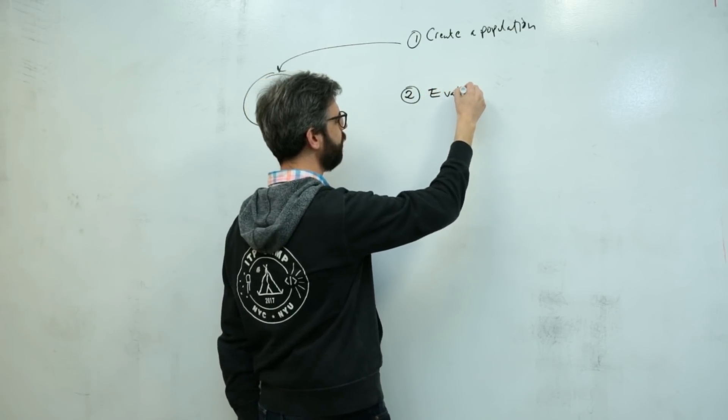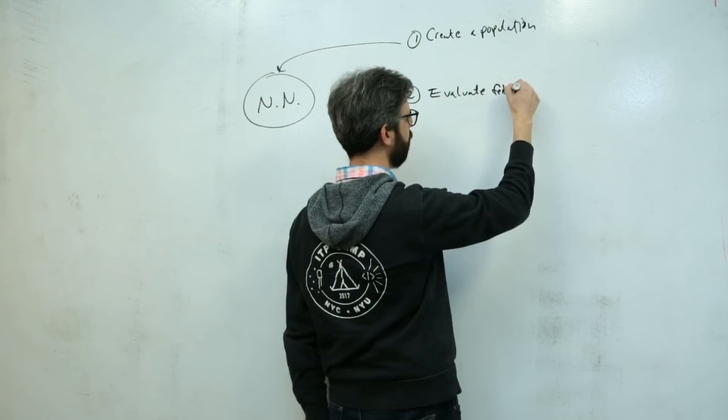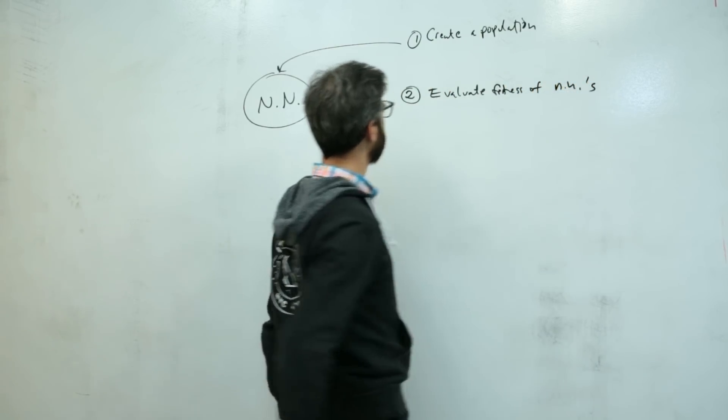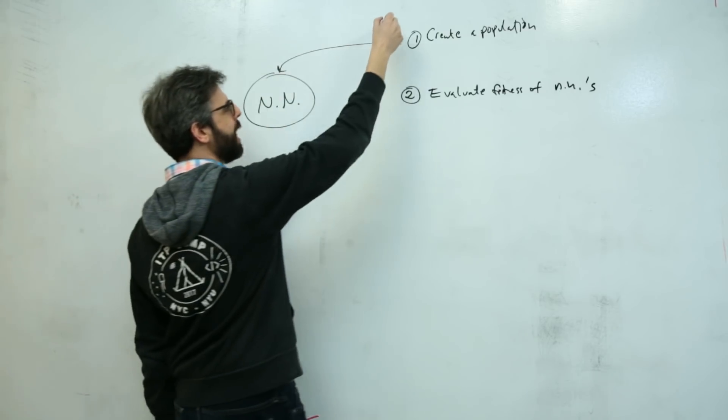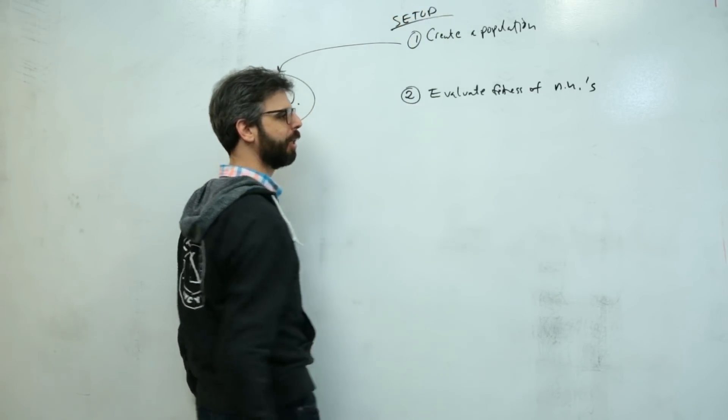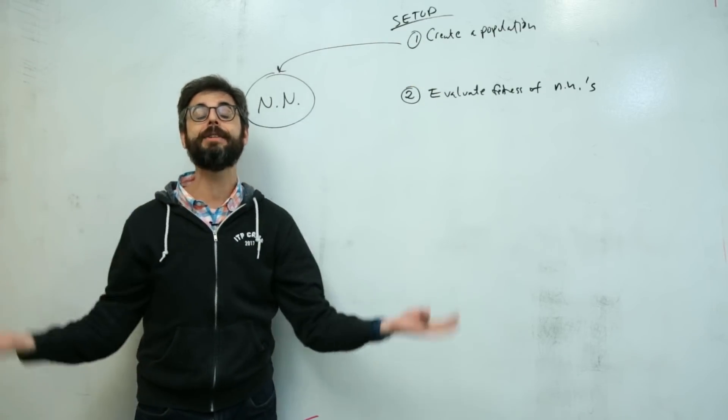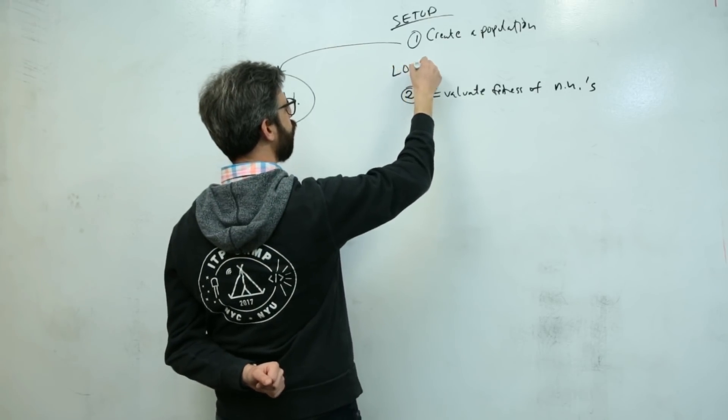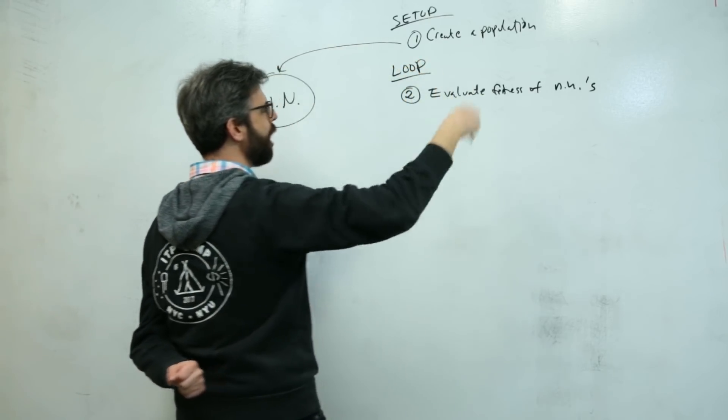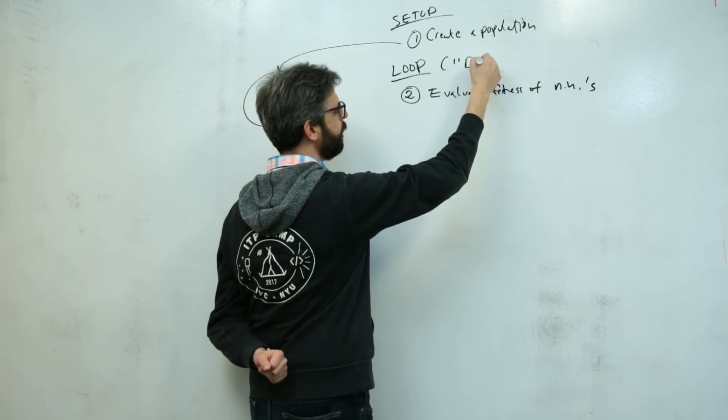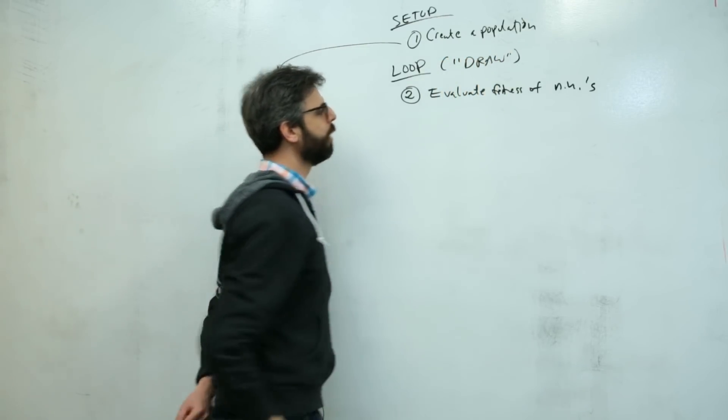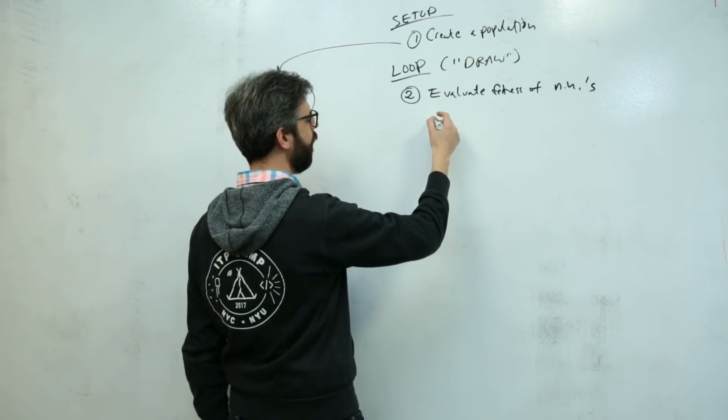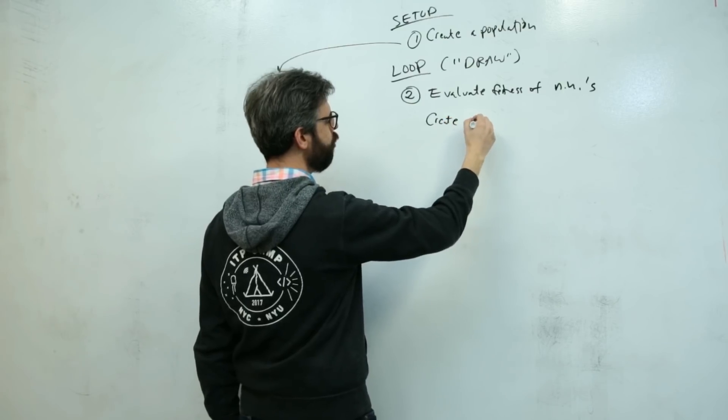Two, I need to evaluate the fitness of neural networks. This is the initialization state that I'm going to do once at the beginning of the program. Then this thing I'm going to do in a loop, generation after generation—in p5 this might be called the draw loop—I'm going to evaluate the fitness of all the neural networks and then create a new population.